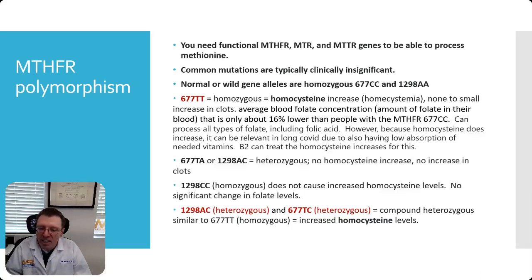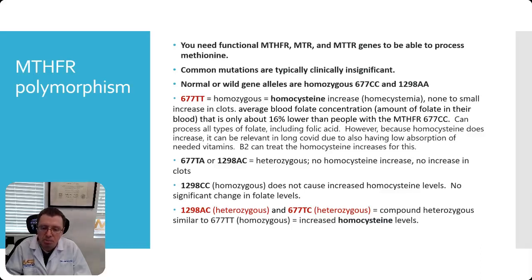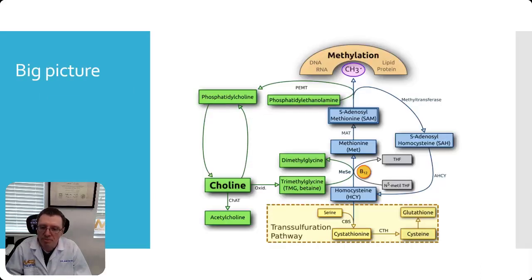For the heterozygous variants, where only one of the genes has the polymorphism, there's usually no homocysteine increase and no increase in the risk of clots. The 1298 cytosine homozygous does not cause increased homocysteine levels and really no significant changes in folate levels. However, if you happen to inherit both — the 1298 heterozygous AC and 677 TC heterozygous — this becomes compound heterozygous and it basically works the same as the original 677TT homozygous. You do see increased homocysteine levels.